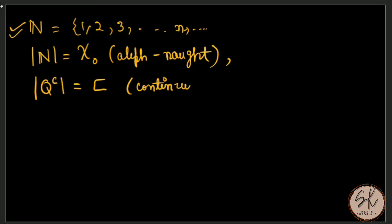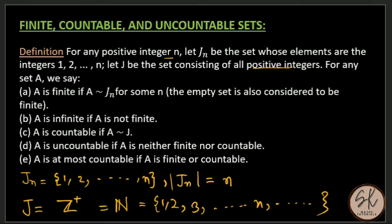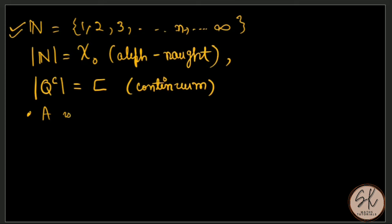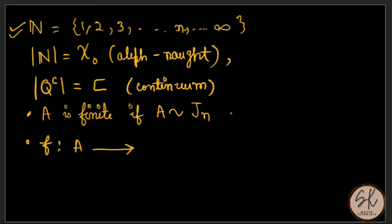J represents the set of natural numbers and Jn represents the set of the first n natural numbers. For any set A, we say A is finite if A is similar to Jn for some n. A is said to be similar to Jn if there exists a bijection between them — that is, a function from A to Jn that is one-to-one and onto.